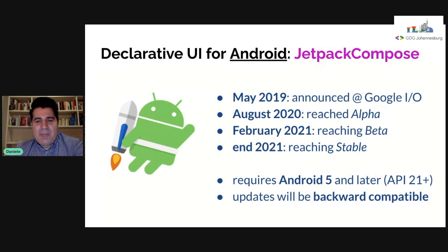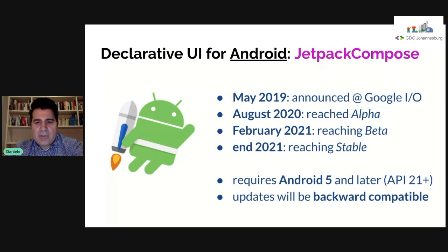Already in the beta version, the Compose team announced that the beta is API stable. All improvements from now to the stable version will just be performance improvements. So there's no blocker at all to start coding with Jetpack Compose. One interesting characteristic is that it requires only Android 5 (API 21), meaning you can use it with existing devices without targeting any later API.